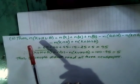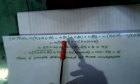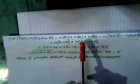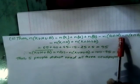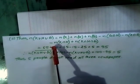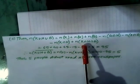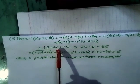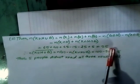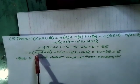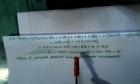Using the formula: NK union H union G = NK + NH + NG minus (NG intersection H) minus (NK intersection G) minus (NK intersection H) plus (NK intersection H intersection G). Applying the given values to find the number of people in the three sets combined.